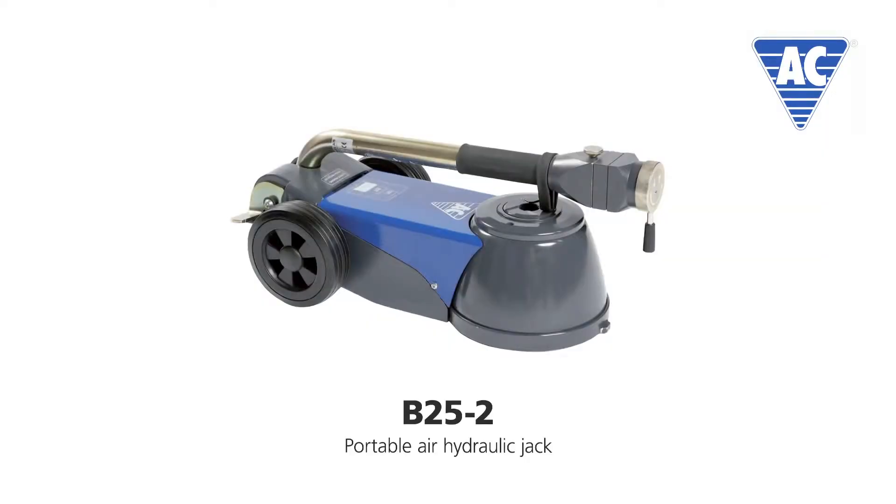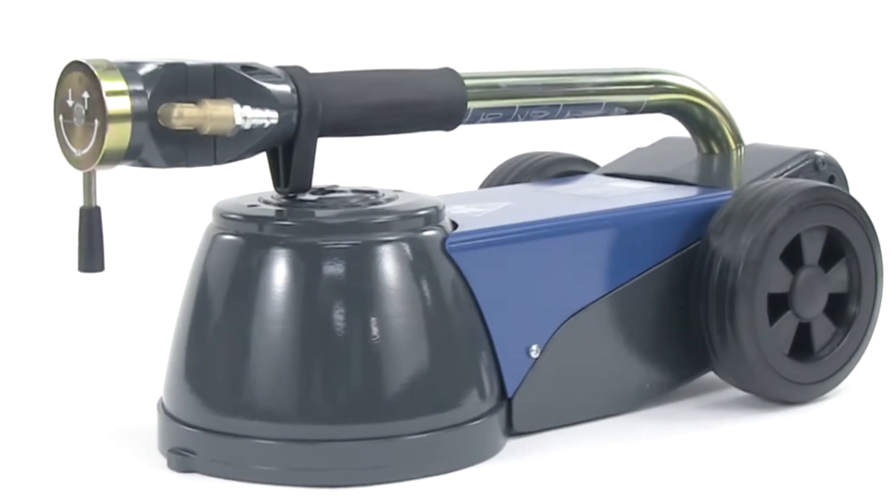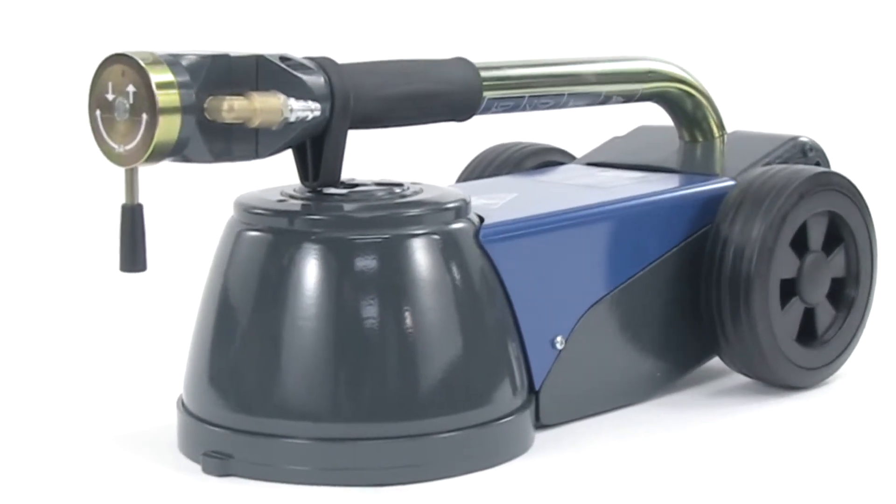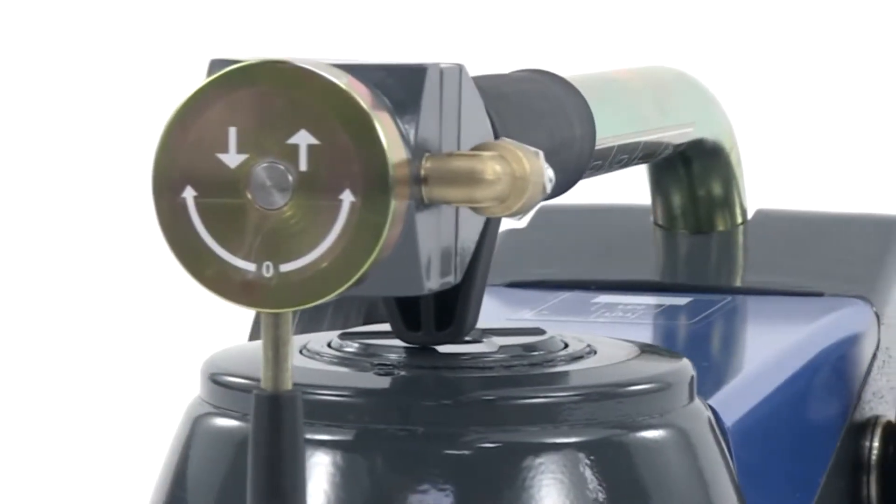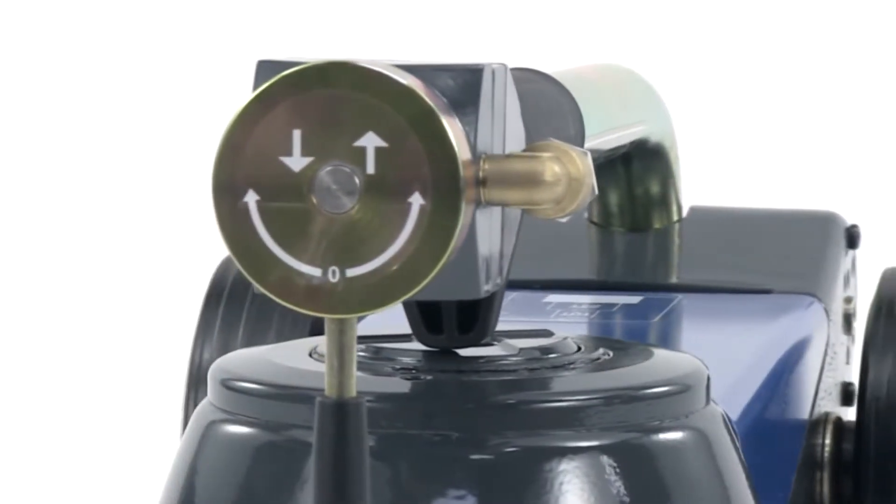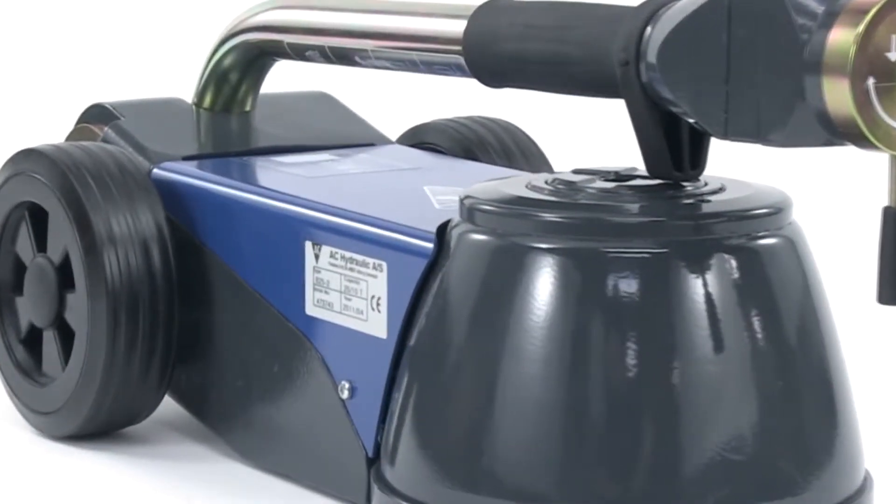The B25-2 is the portable air hydraulic jack from AC Hydraulic. Like all other products from AC Hydraulic, the B25-2 is a 100% Danish product, manufactured to the highest quality standards.